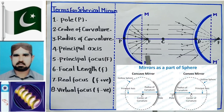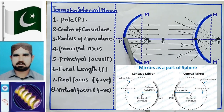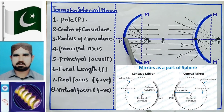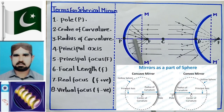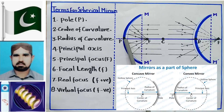अब चलते हैं focal length की तरफ। दो definitions बताता हूं। The parallel beam of rays after reflection focuses at a point F; the distance between pole and focus is called focal length of the mirror। It is also defined as half of the radius of curvature PC। यानि center of curvature और pole के दर्म्यान वाला जो total distance है, इसका half करद तो भी focal length आ जाती है।